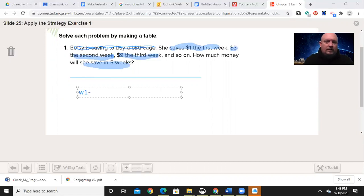Week one was $1. Week two, I'm going to go into triple digits just in case. Week three, $9. Week four, $27. Week five, $81.